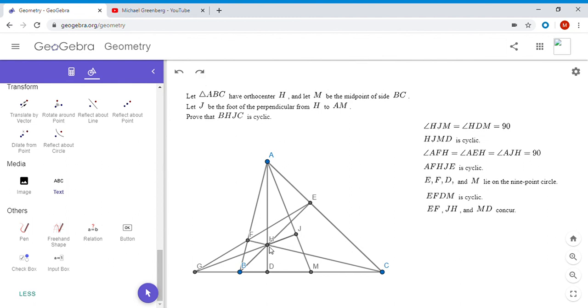By definition of the orthocenter, angle BFC and angle BEC are both right angles. And so what that means is that BFEC has to be a cyclic quadrilateral. So what do we do there?